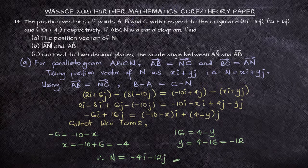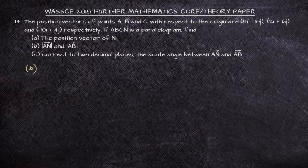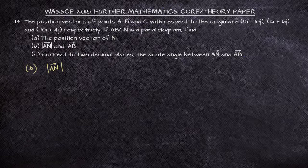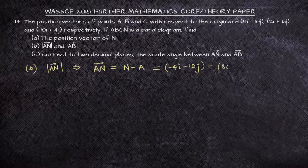Equating I components: minus 6 equals minus 10 minus X, so X equals minus 10 plus 6, which is minus 4. For the J component: 16 equals 4 minus Y, so Y equals 4 minus 16, which is minus 12. Since N was defined as Xi plus Yj, the position vector of N is minus 4i minus 12j. That completes the parallelogram. Now for part B, we are asked to find the magnitude of vector AN. Vector AN equals N minus A.